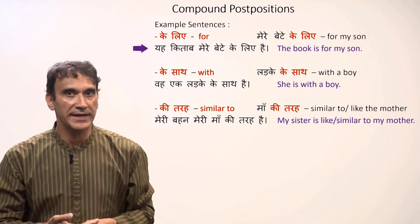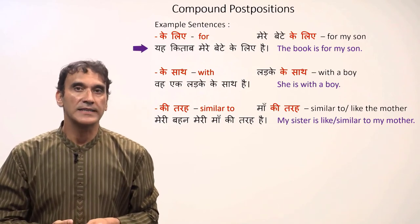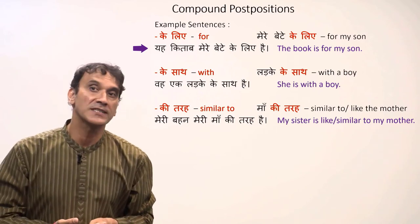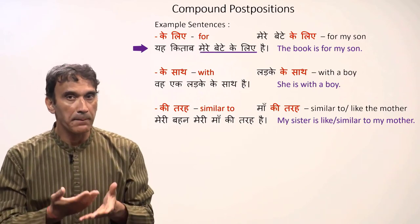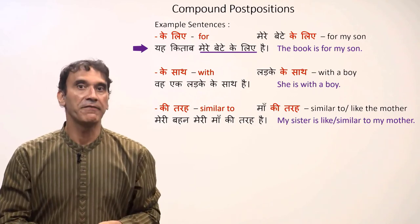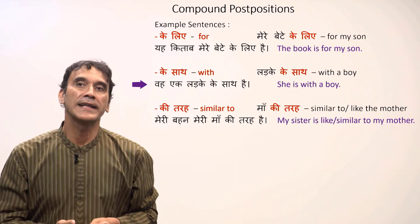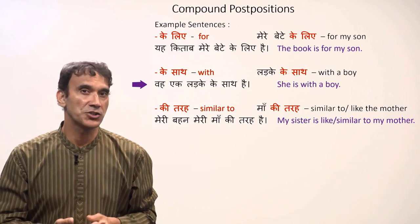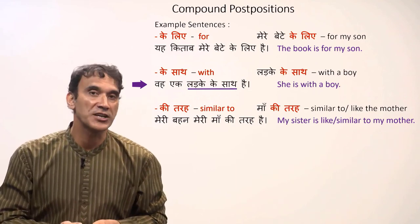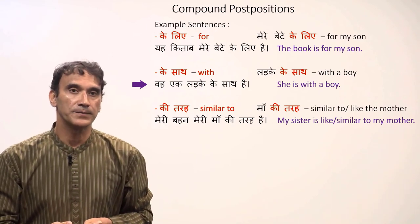The book is for my son. Since ke liye is the postposition, the noun and the possessive before it will decline — mera beta will become mere baite. Mere baite ke liye means 'for my son.' Next: wo ek ladke ke saath hai, 'she is with a boy.' Again, the noun ladka changes to ladke with a postposition — ladke ke saath, 'with a boy.'